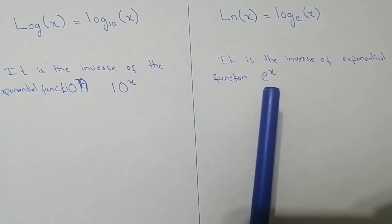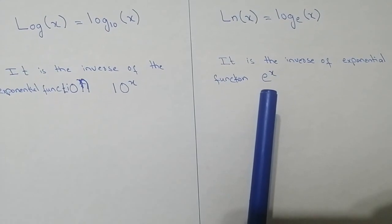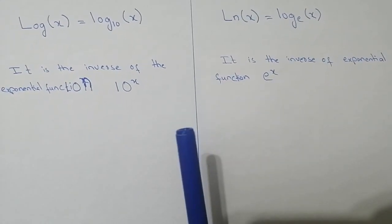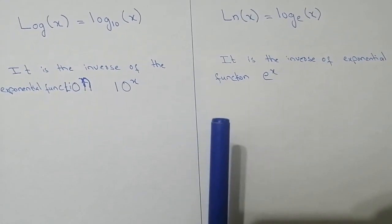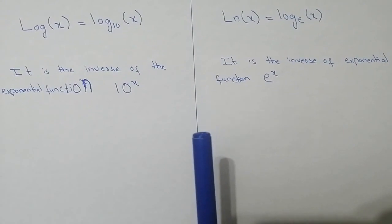We know the value of e, which is approximately 2.7 something. So both are quite similar, but they have this minor difference in their base.